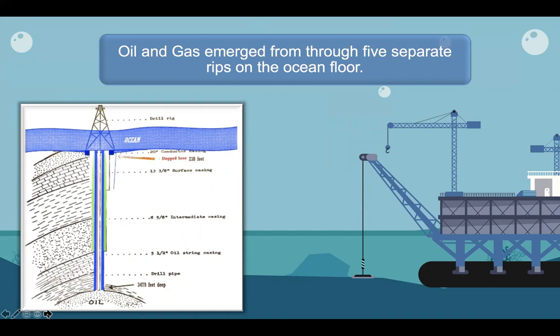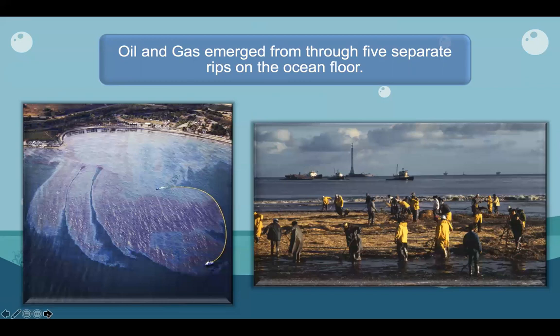Even after the well was further plugged with drilling mud during the next week, these continued to boil up. Investigators later determined that oil and gas was emerging uncontrolled through five separate rifts on the ocean floor. Workers were finally able to control the leakage, at least to a minimal degree, on February 6th. Seepage from the rifts in the ocean floor continued well into 1970.